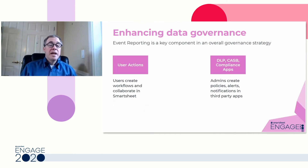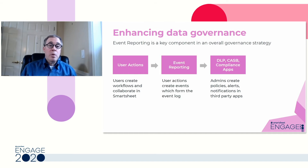Next, let's talk about enhancing data governance. Typically, you have user actions — users are creating workflows and collaborating in Smartsheet. You may also have a system called data loss prevention, also known as a DLP, or a CASB, or another compliance app that you use to manage all of your cloud apps. Admins typically will create policies, alerts, and notifications in these third-party apps. If you have these apps and you want to connect the user actions in Smartsheet into these other systems, you need a product called Event Reporting. Event Reporting is an optional add-in available if you have an enterprise or premier plan, and it is a log of user actions as users are creating, sharing, and collaborating using Smartsheet. The event log file is the data that goes into your DLP, CASB, or compliance apps.